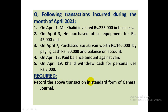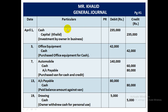You are required to record the above transactions in the standard form of journal. Journal banake usme transactions ki journal entries record karni hain. Journal ke saare columns — date, particulars, PR (post reference), debit, credit — banaye jayenge with a page number. Date ke column me date aur month likha jayega, aur entries ke baad line draw karenge.